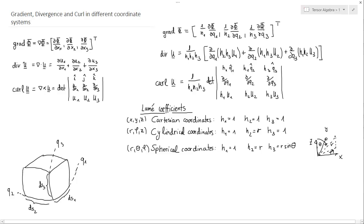These coefficients are called Lamé coefficients, named after the French mathematician Gabriel Lamé, who did a great deal of work on curvilinear coordinate systems and investigated these kinds of coefficients.